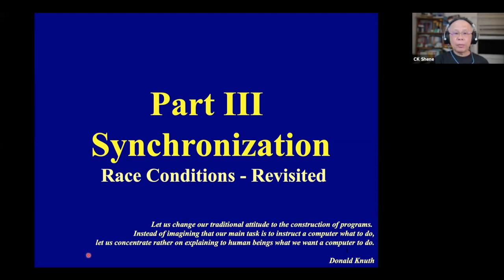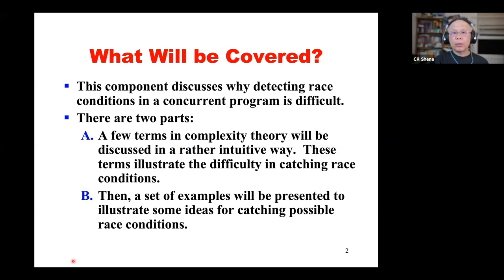This section has two components, or two units. We have a few terms in complexity theory, because this is not a formal language nor complexity theory course, so all the discussion will be very intuitive. We'll use these terms to illustrate the difficulty in catching race conditions, then use a set of examples to gradually illustrate some ideas for catching possible race conditions.